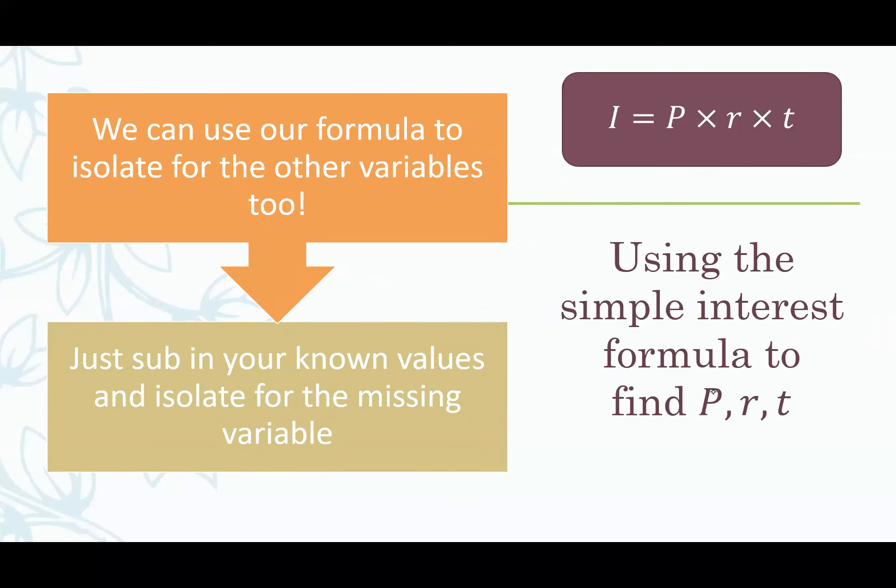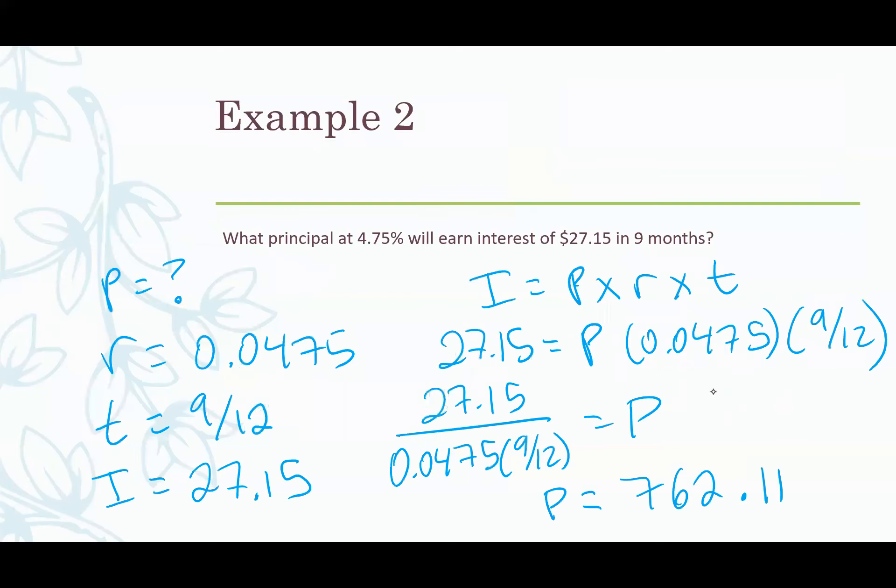We can also use this formula to isolate for the other variables. So you can be given any three of these four variables and then rearrange to solve for whatever is missing. Some examples. What principal at 4.75% will earn interest of $27.15 in nine months? So it might sound like a lot of information but again we're just going to use our formula. Let's write down what we know and what we don't know. So principal is what we're looking for because it's asking right away what is the principal? What principal would have this situation? So P is our unknown.